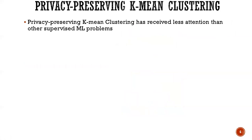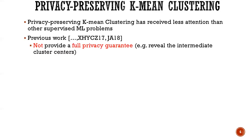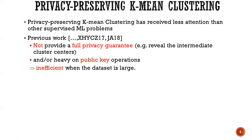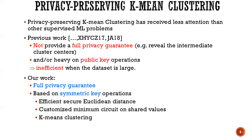K-Means clustering is a popular machine learning problem; however, there are very few works focused on its privacy-preserving version. Some prior works don't provide full privacy guarantees — for example, they reveal intermediate cluster centers. Other works rely heavily on public key operations and require homomorphic encryption per item, making them inefficient on large datasets. In this work, we provide full privacy guarantees. Our scheme is based on symmetric key operations, and we propose an efficient secure Euclidean distance circuit and a customized minimum circuit on shared values. As a result, our scheme is 5 orders of magnitude faster than prior work.